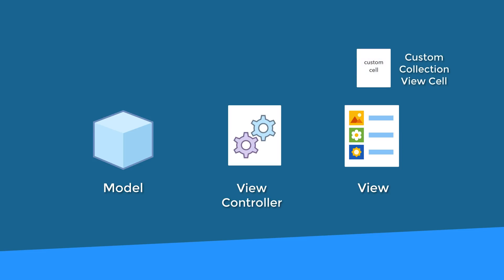There's also another class we'll be creating, which is a customized cell of the collection view. A collection view is a user interface element that lets us display things in a grid, and we're going to create a subclass of its cell so that we can control how the cells in the grid will look. Now, having gone through this, you might be thinking: how am I supposed to come up with this for my own app? That's the thing — it comes with experience.